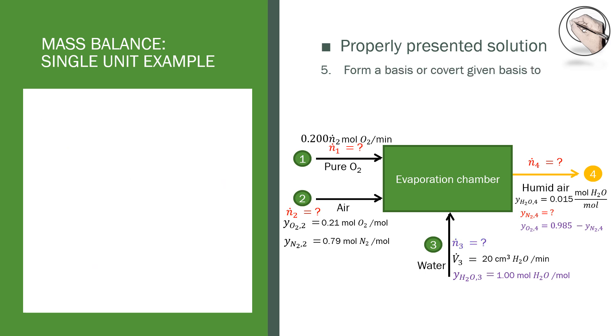The fifth step is to form a basis or to convert the one that's given to you if necessary. A basis refers to the amount of material in a stream or a flow rate that you can assume or use to do a mass balance for the whole system. In this case there is no need to assume a flow rate because we have been given one in terms of volume. Seeing that we want the solution in terms of moles, we need to convert the volumetric flow rate to a molar flow rate.